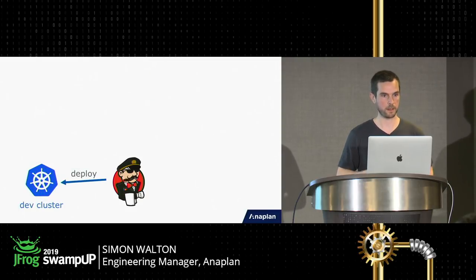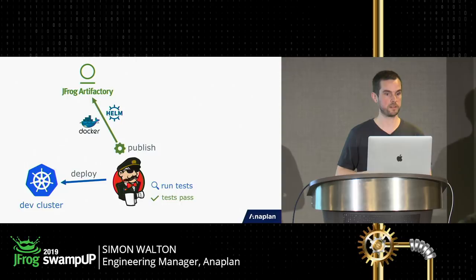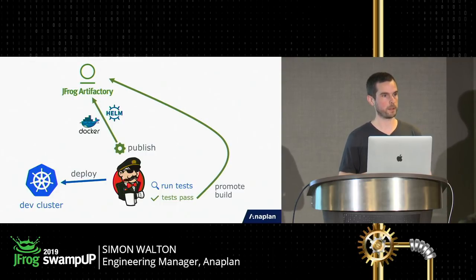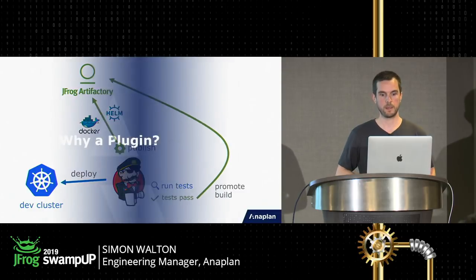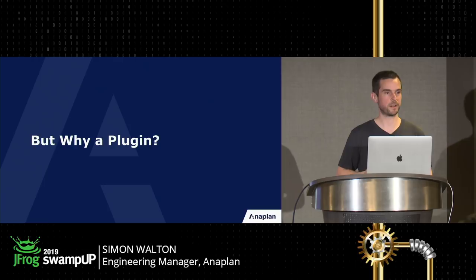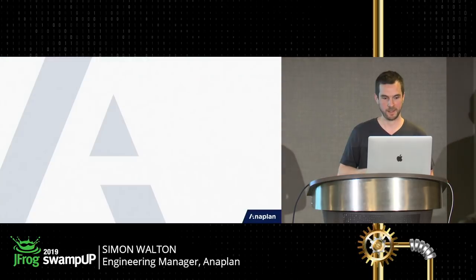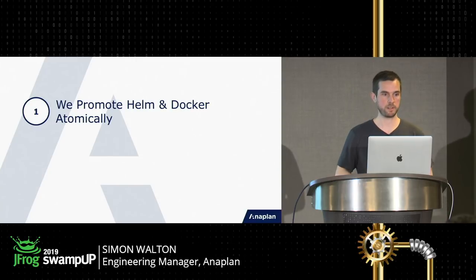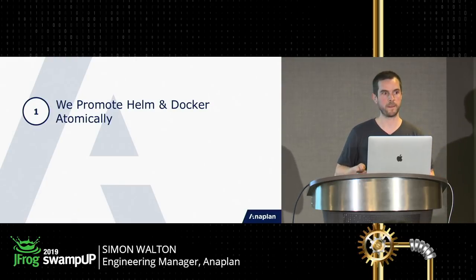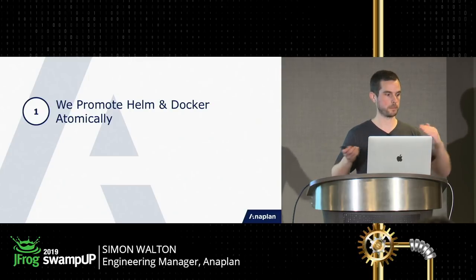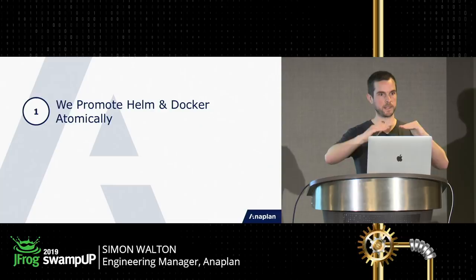Briefly, this is how the pipeline works: you have a Jenkinsfile, you deploy to your development cluster, you publish your Helm chart and Docker images to Artifactory — those are associated with an Artifactory build — and then you ask Artifactory to promote the build. At this point you may be thinking: why did we write a plugin? Artifactory can totally do promotions. We wanted to promote Helm charts and Docker images atomically — meaning if you promote one thing, the other goes with it, or nothing happens at all. We either promote both or neither.